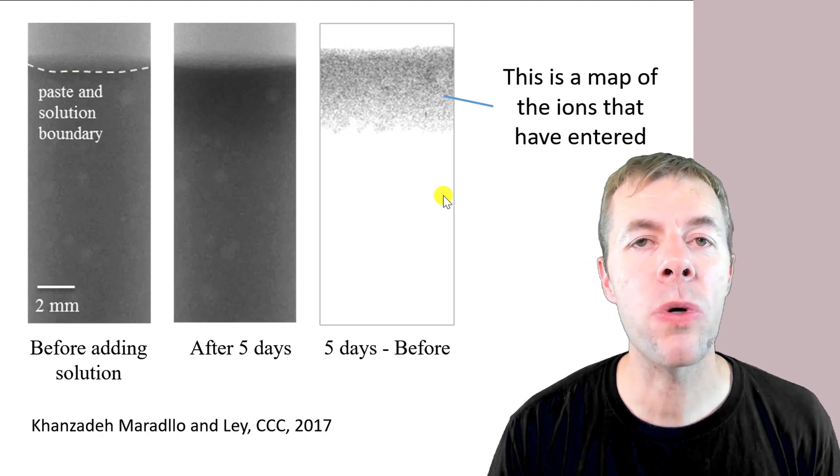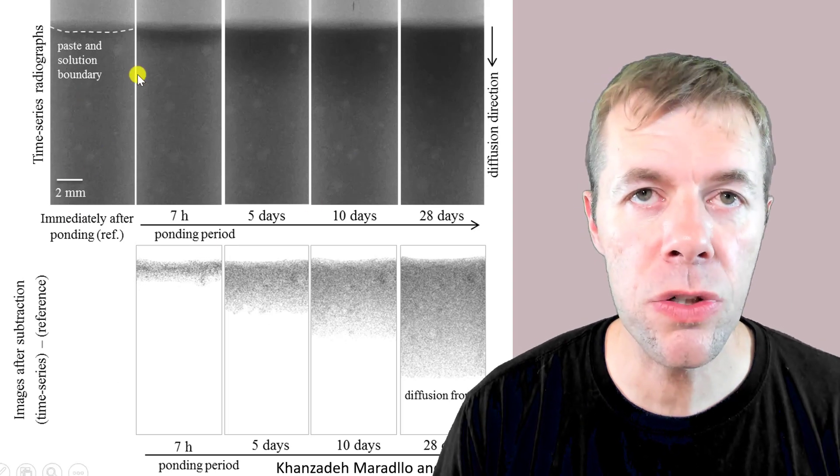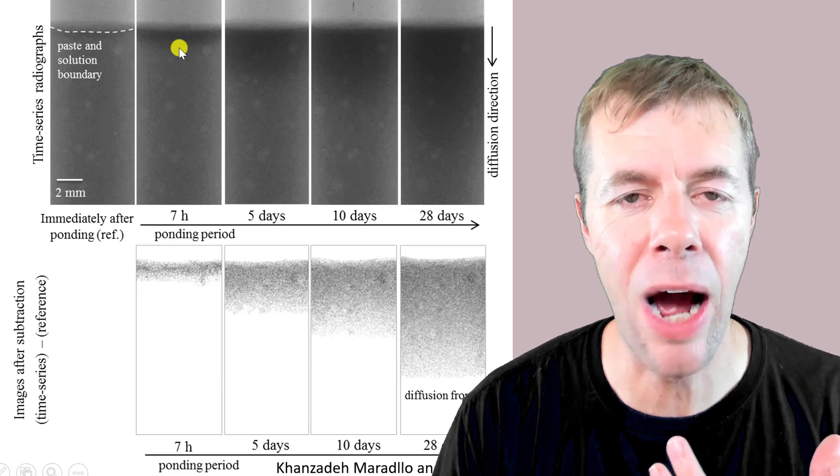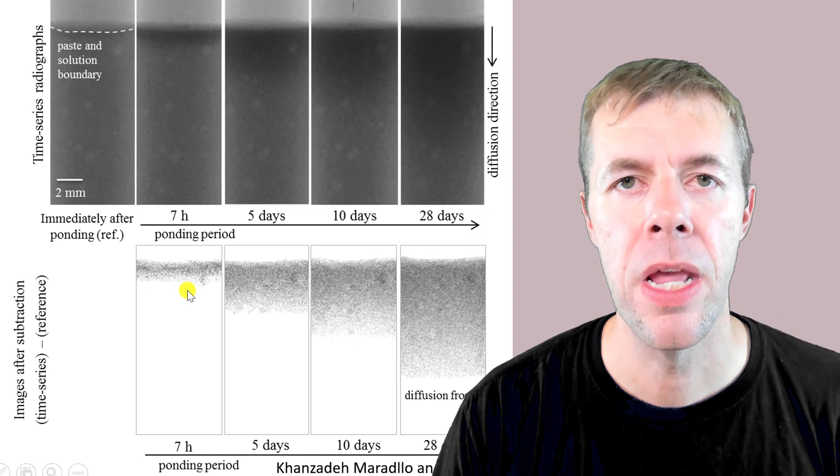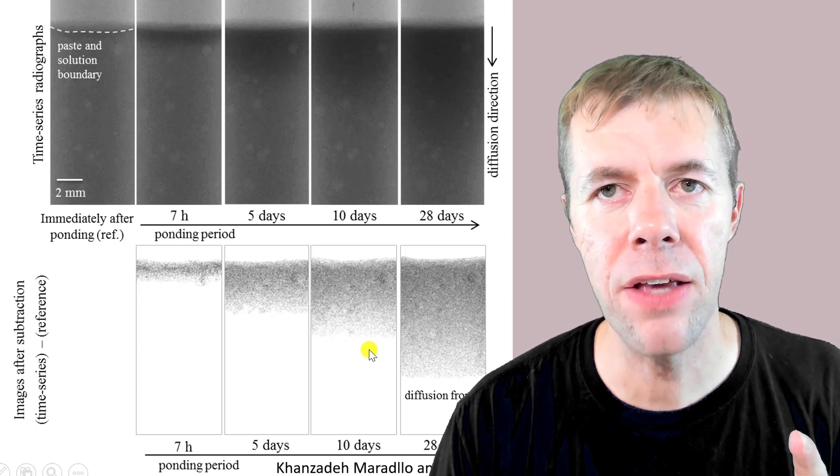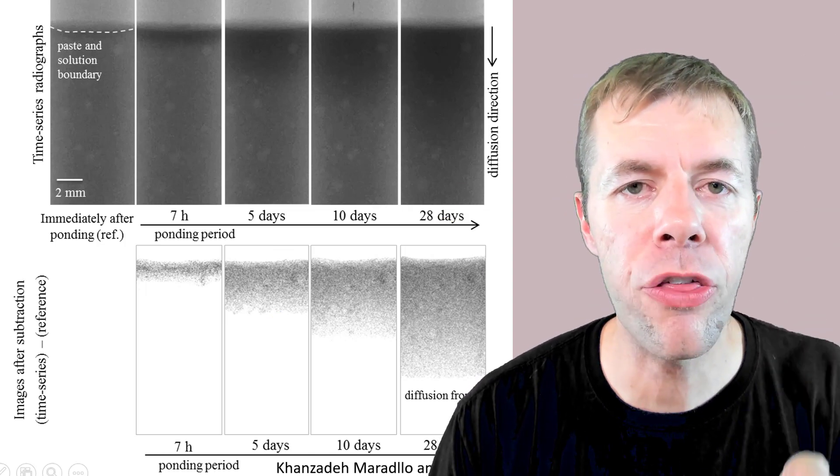I think this will make more sense when I show you lots of different days. This is the original sample and this is where we put the iodide on top for seven hours. And you can see the gray, it's penetrated just a little. And then after five days it's penetrated more. And then ten days and then 28 days. We can see it going through.